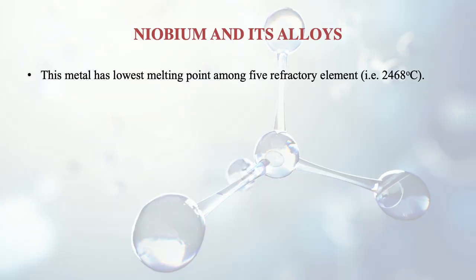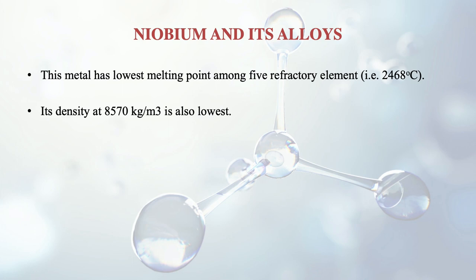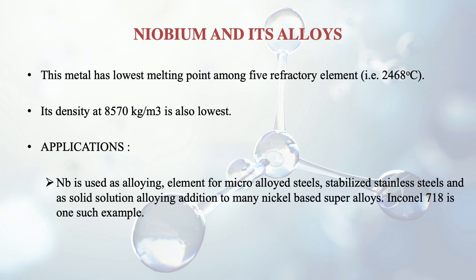We will discuss niobium and its alloys. This metal has the lowest melting point among the five refractory elements discussed in this session — 2468 degrees centigrade — and its density of 8570 kg per meter cube is also the lowest. Niobium can be used as an alloying element for micro-alloyed steels, stabilised stainless steels, and as a solid solution alloying addition to many nickel-based superalloys.